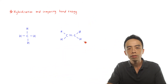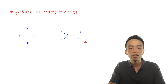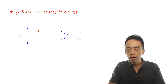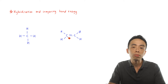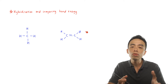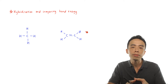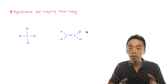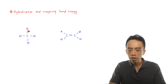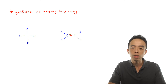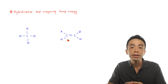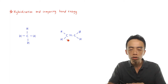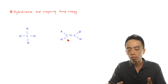Let us start our discussion comparing two compounds: methane (CH4) and ethene (CH2=CH2). If I want to compare the bond energy involving the CH bond in methane versus the CH bond in ethene, how do I decide which CH bond is more stable?